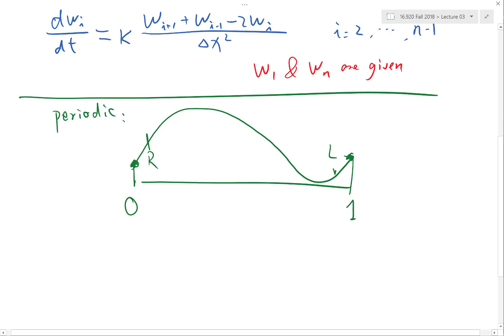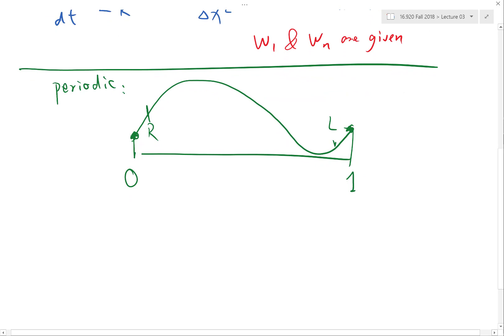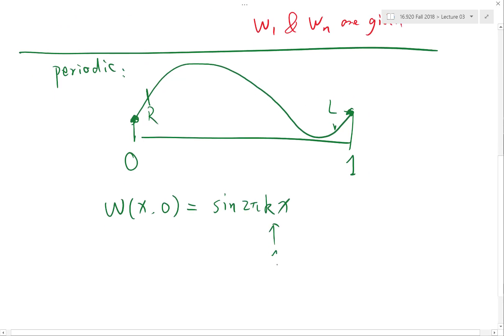They are periodic and let's set our initial condition w(x,0) to be sine of 2πkx. Let's set k to 1 first and then try a few different k's to see how it looks like.